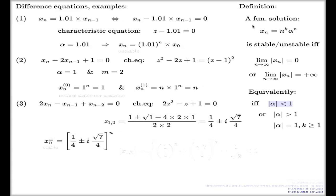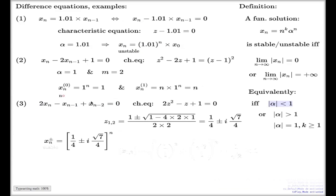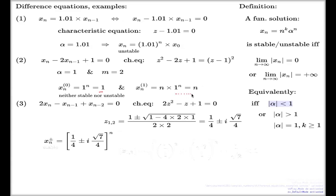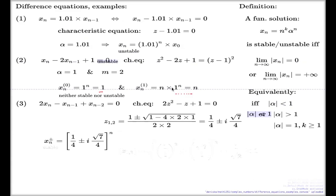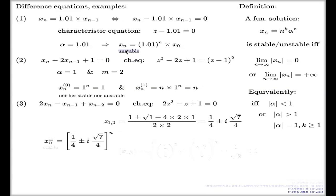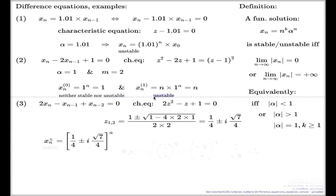So, in this case — this solution is unstable. This one is neither stable nor unstable, because it's just one. And this one is unstable, so this solution is unstable, because it goes to infinity as the index goes to infinity.